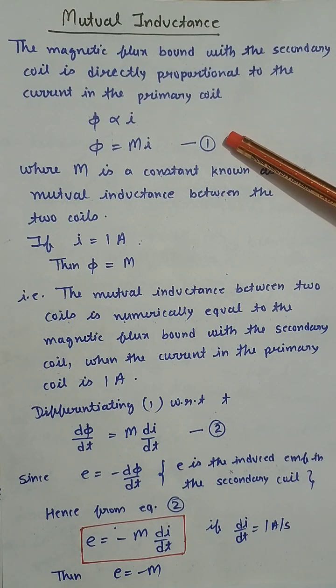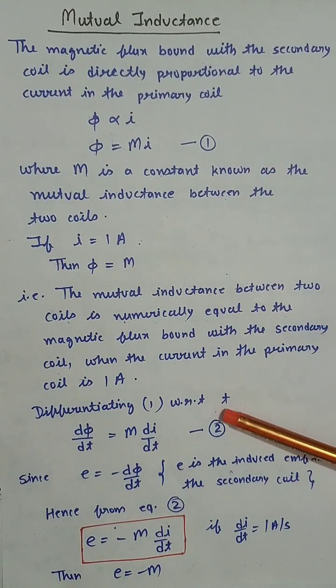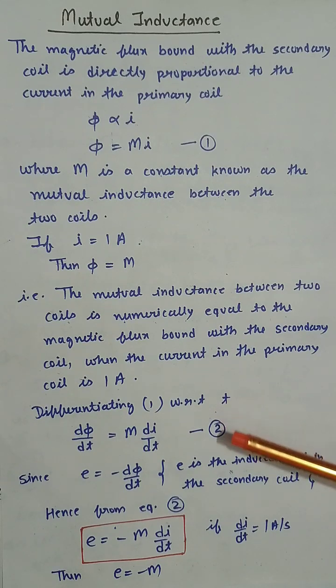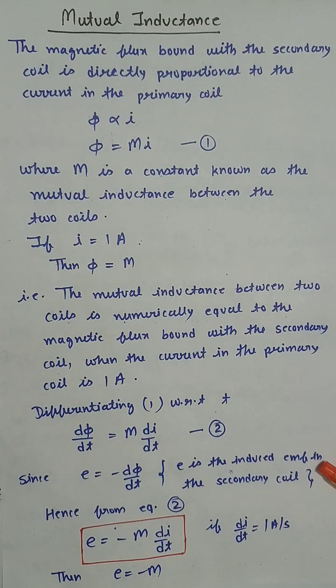Differentiating equation 1 with respect to t, we get d(phi)/dt equals M di/dt. Since we know that E equals minus d(phi)/dt, where E is the induced EMF in the secondary coil.